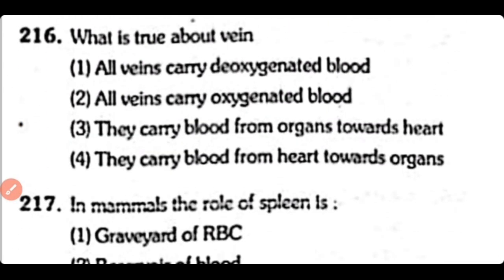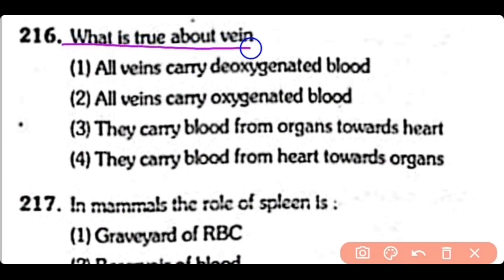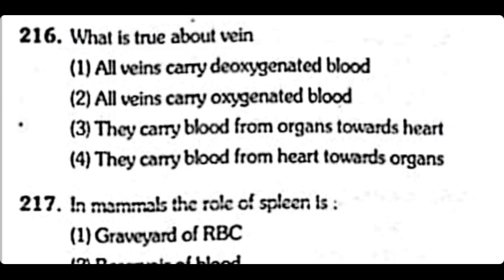Q216. What is true about veins? All veins carry deoxygenated blood, all veins carry oxygenated blood, they carry blood from organs towards the heart, or they carry blood from the heart towards the organs. So the correct answer is Option 3 — veins carry blood from different organs towards the heart.